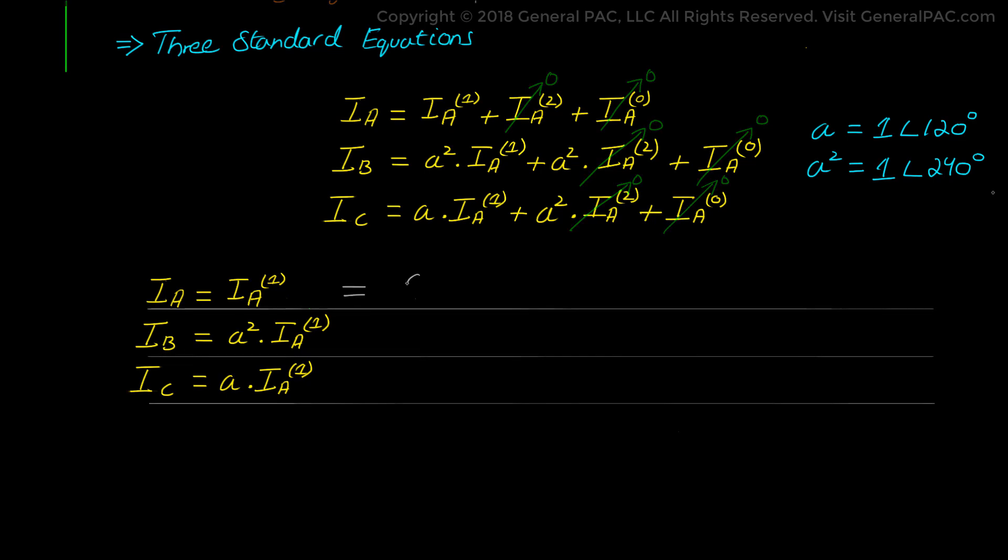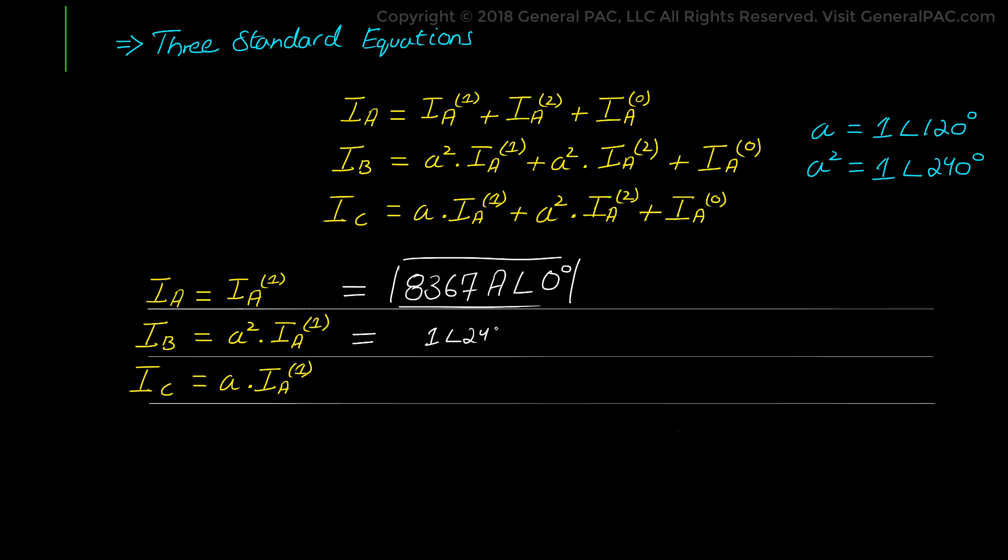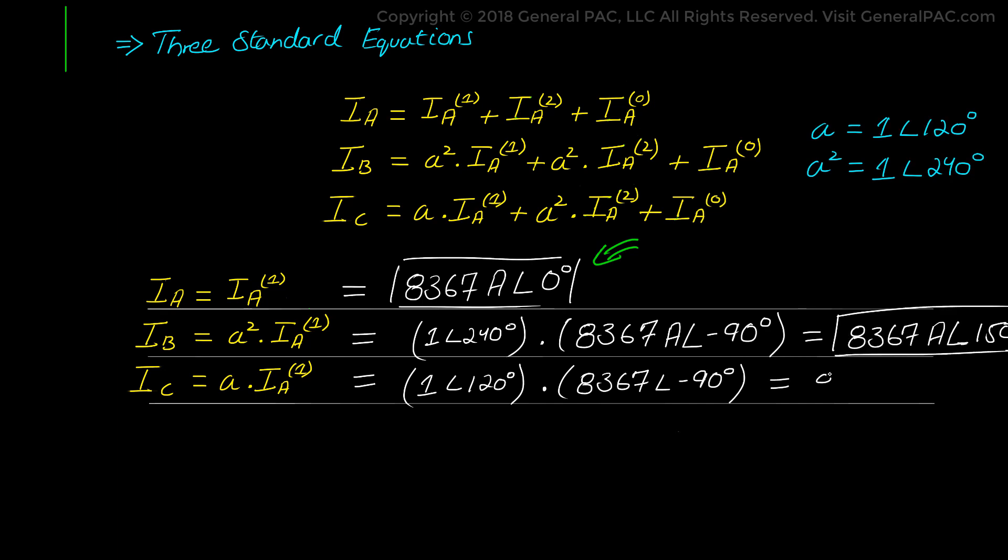From here all we need to do is just plug in all of these math calculations that we did previously. So we plug in the values of A and A squared and positive sequence current of 8,367 amps at the angle of -90 degrees into the 3 equations and that's going to give us the current values for phase A, B and C. These are the line values. So phase A current being 8,367 amps at angle of -90 degrees. Phase B current being 8,367 at angle of 150 degrees. And phase C current being 8,367 at the angle of 30 degrees.